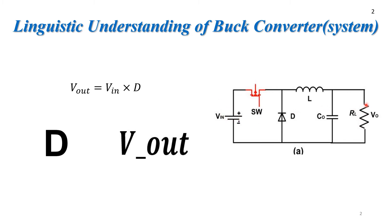It maintains this output voltage constant even when the input voltage varies or the load varies. We can see that the buck converter works on a simple relationship: its output voltage simply depends upon input voltage multiplied by the duty cycle. The duty cycle refers to the pulses provided to the switch.